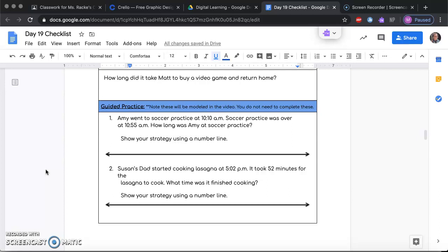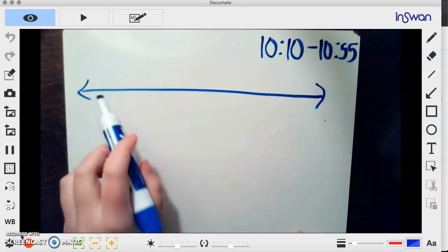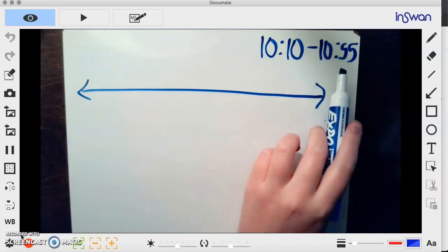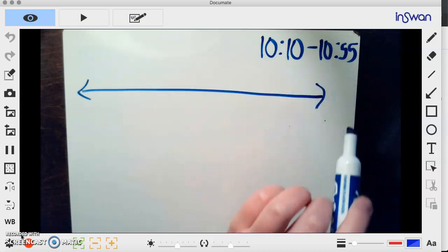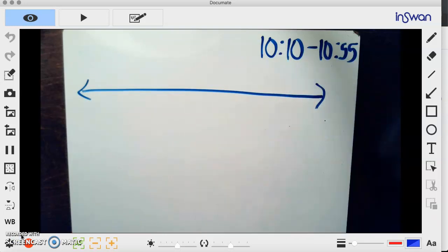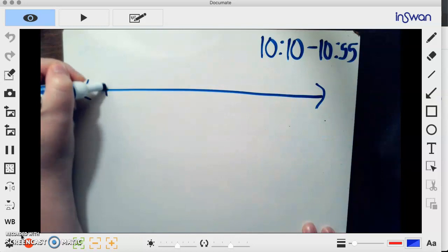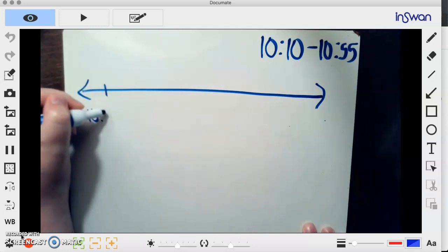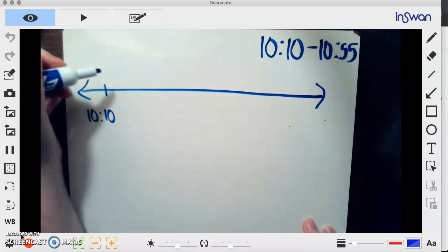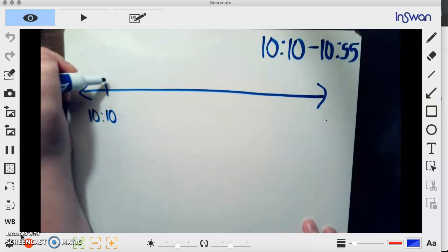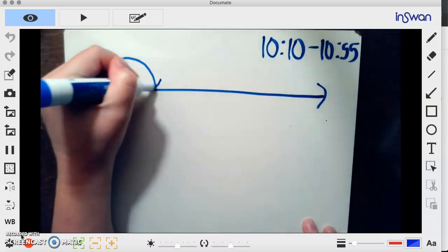So, Amy went to soccer practice at 10:10 a.m. Soccer practice was over at 10:55 a.m. How long was Amy at soccer practice? Show your strategy using a number line. I have my number line and I wrote up above 10:10 to 10:55 because that is the amount of time her soccer practice was. On my number line I'll start by putting 10:10, and now I'll just start working on my number line.